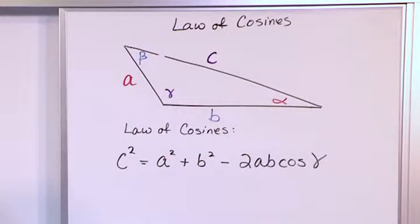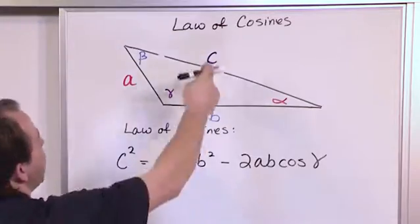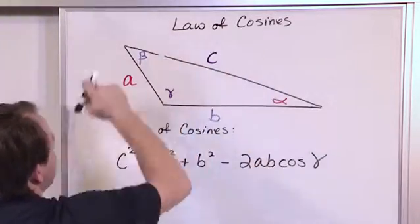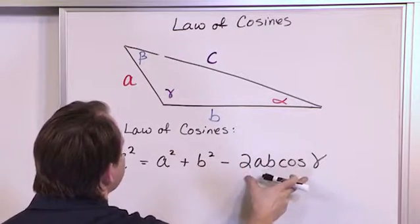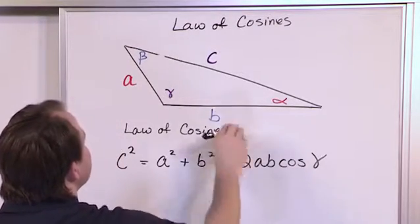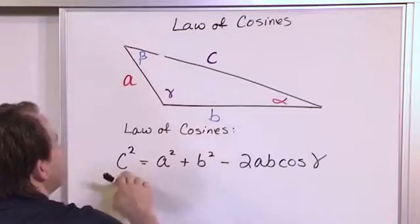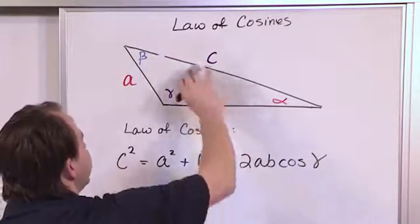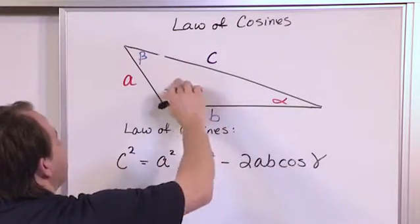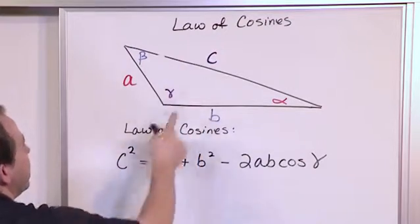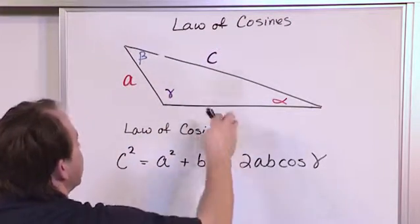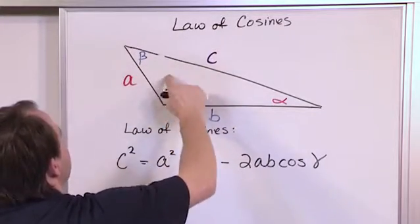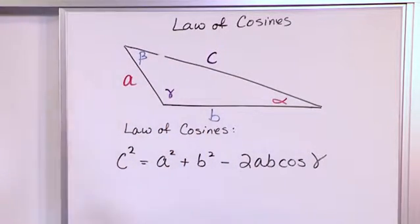So literally what you're doing is to find the length of the longest side, c squared. It's a squared plus b squared but you're subtracting off a term. This term is two times the other two legs other than the one I was trying to find. The other two legs times the cosine of the angle that falls between them. So again this side squared is equal to this squared plus this squared minus two times those sides that I don't know times the cosine of the angle in the middle.